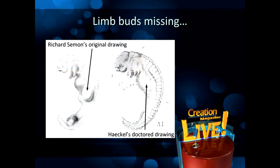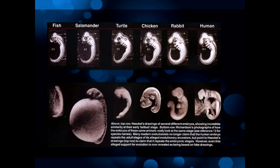Another problem: the embryos lack limb buds in places where Haeckel should have shown them. At whatever stage is selected for comparison, some species will display limb buds while others won't — the same situation as with the heart bulges. When you compare the photographs to his drawings, limb buds present in real embryos are absent from Haeckel's drawings. The question arises whether Haeckel knew this — but that doesn't wash. He was a doctor who certainly should have known. The remarkable answer is yes, Haeckel did know what he was doing. This was deliberate.